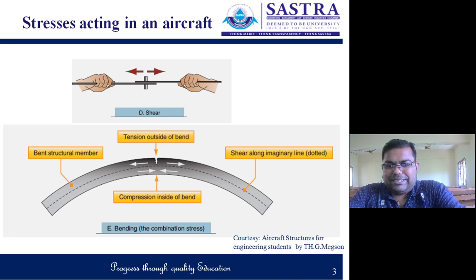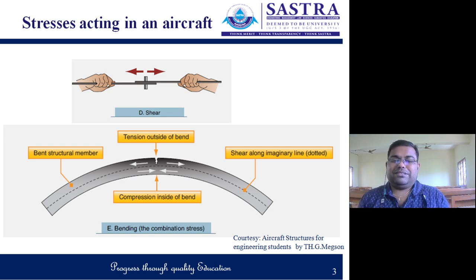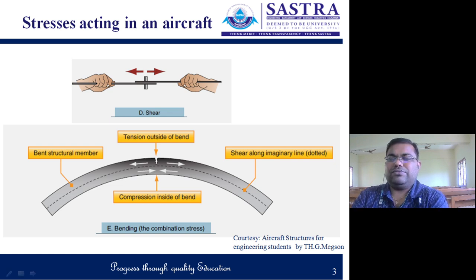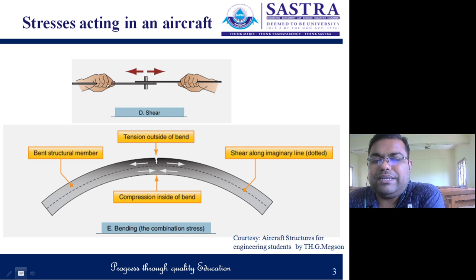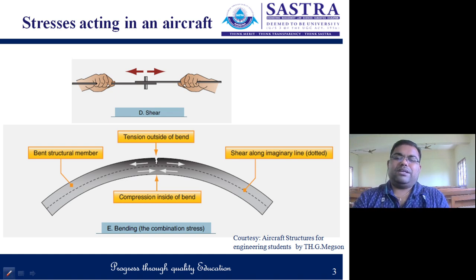Due to the combined effect, the aircraft fuselage is subjected to bending as well as a combination of tension, compression, and bending — a combined load condition. The engines on the aircraft wing induce torque on the fuselage through propeller rotation. Torsional stress is transferred from the wing to the fuselage, so the complete aircraft is subjected to torsional stress.